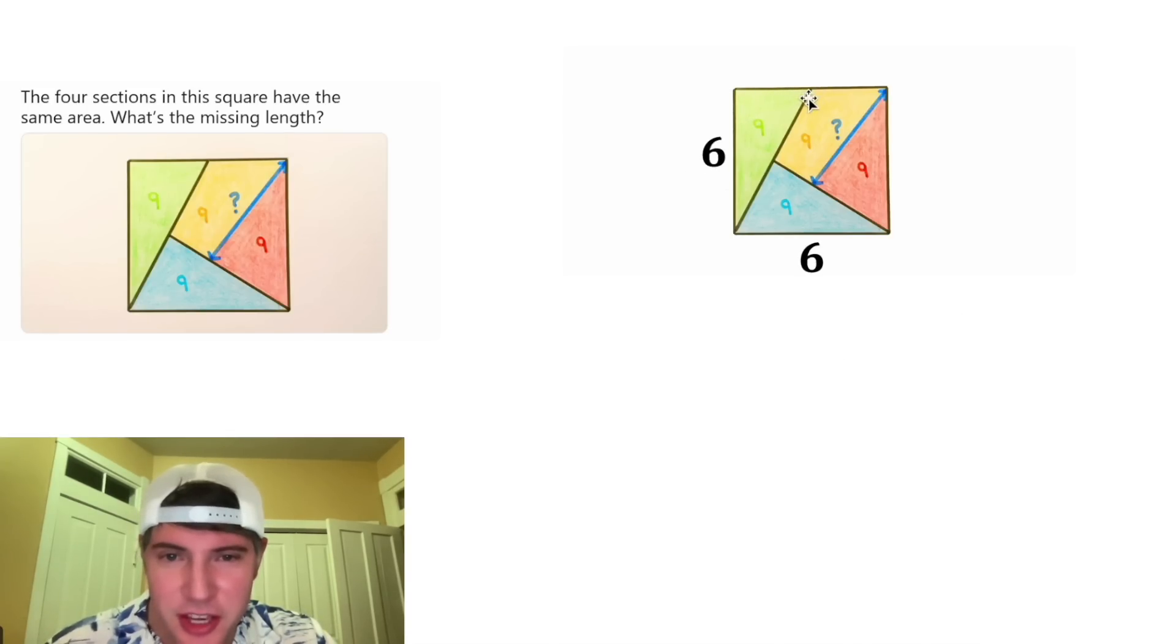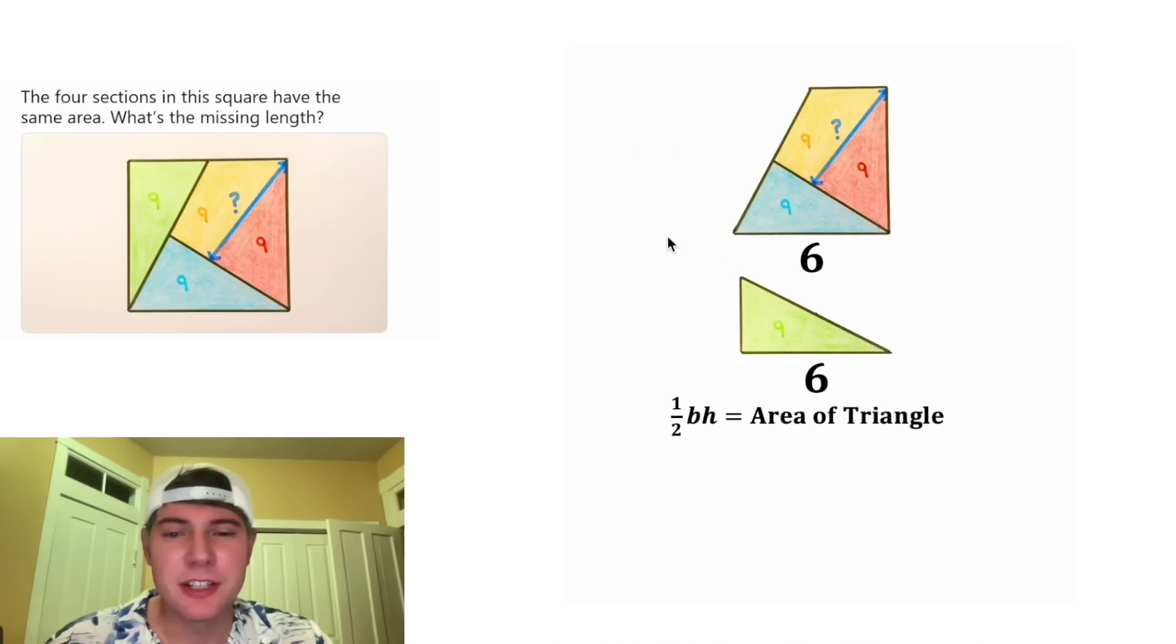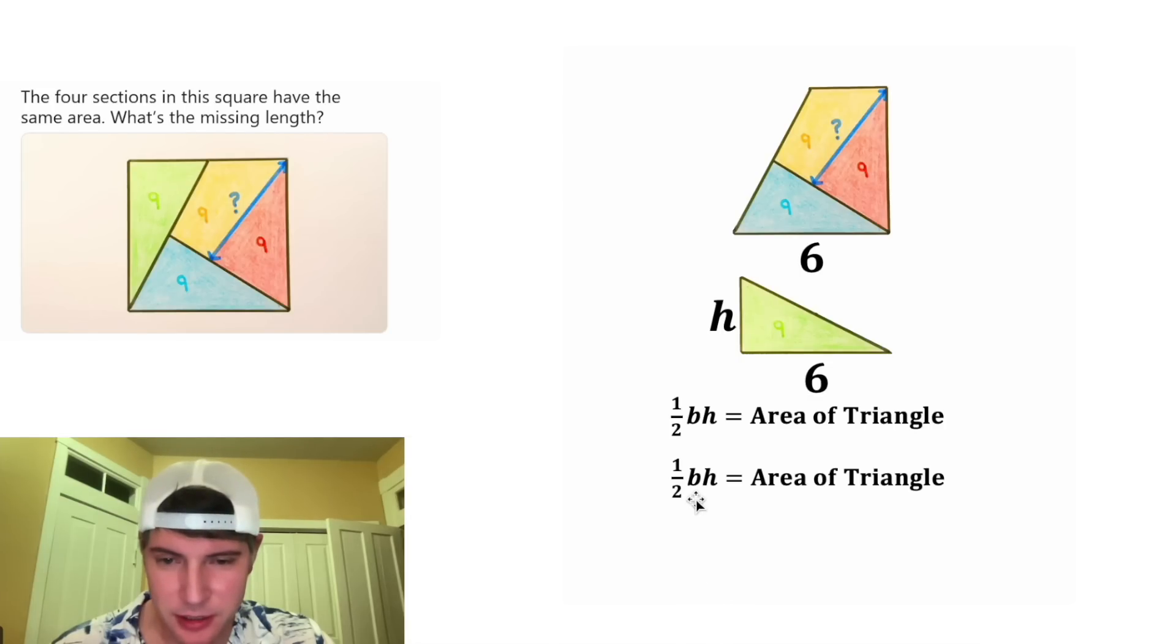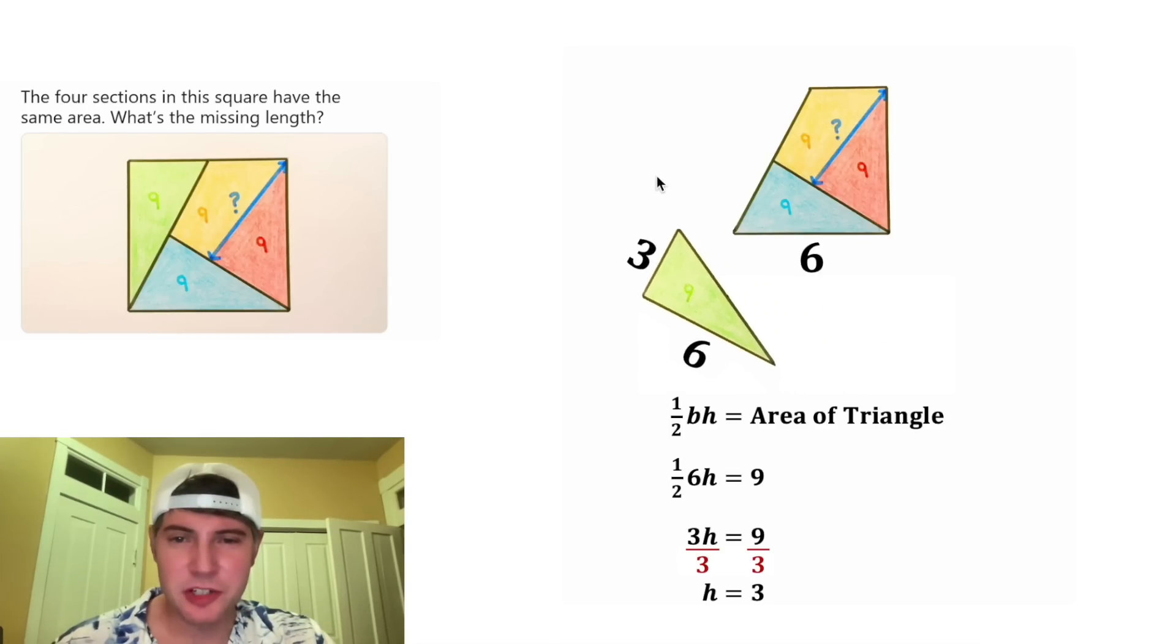Next, let's focus on this green triangle right here. We can pull it out. The area of a triangle is equal to one half base times height, where this right here is the height. We have enough information to solve this height. The base of this triangle equals 6, so we can change the b into a 6. We were given that the area of this triangle equals 9. One half of 6h equals 3h. After we divide both sides by 3, we get h equals 3. So we can change this h into a 3, and let's put this triangle back.